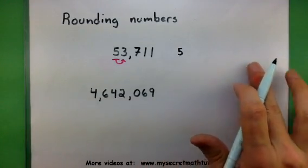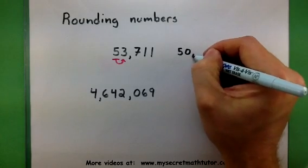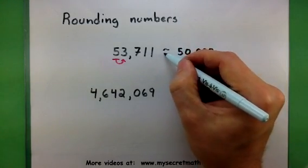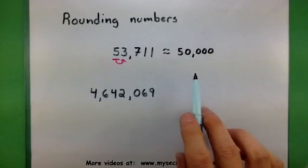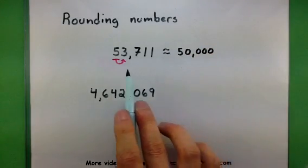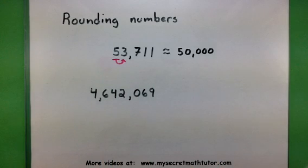With all the rest of the numbers, I am going to replace them with a 0. This is known as rounding down because if I look at this new number I formed, 50,000, it is less than my original number.